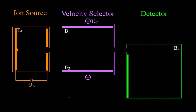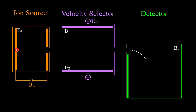Here is a schematic for a Bainbridge Mass Spectrometer. We have an ion source and accelerator, a velocity selector, and a detector. The Bainbridge Mass Spectrometer is typically used to determine the atomic mass of different atoms. We'll go through a step-by-step explanation of how each part works — a positively charged particle is accelerated, filtered by velocity, and then separated by mass in the detector, traveling a curved path.